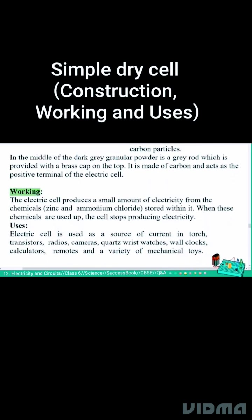Working: The electric cell produces a small amount of electricity from the chemicals zinc and ammonium chloride stored within it. When these chemicals are used up, the cell stops producing electricity.